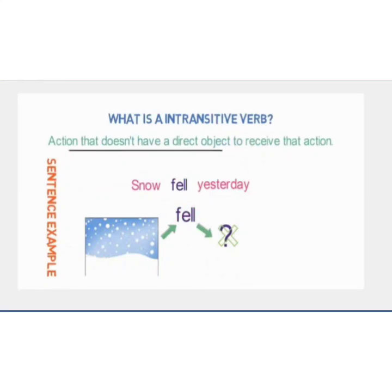Now let's see what an intransitive verb is. All those actions that have no direct object to receive that action are known as intransitive verbs. For example: 'Snow fell yesterday.' In this sentence, snow is the subject, fell is the verb, but where is the receiver? There is no receiver — only a mention of the time or the day. So from this sentence we can understand that there is no receiver, and all sentences where there is no receiver of the action contain an intransitive verb.